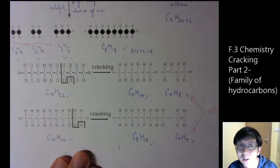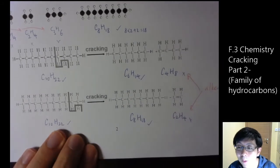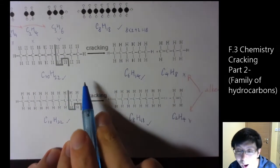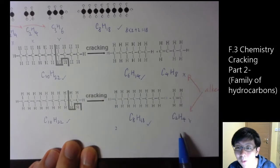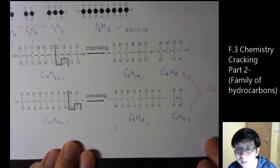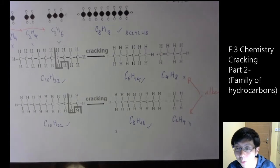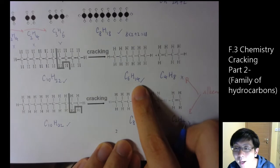Actually, in the cracking process, there are some other things being produced. Sometimes they give carbon atoms or hydrogen atoms or hydrogen gas. However, there is a very high chance to produce both alkanes and alkenes.